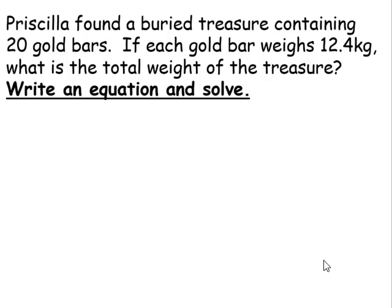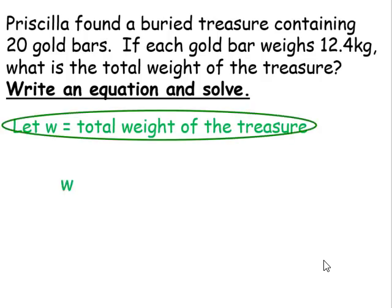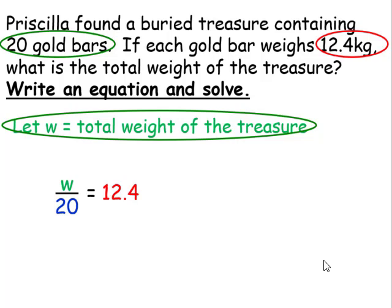So again, we're going to define the variable stating let w equal the total weight of the treasure. Therefore, if we have the weight of the treasure and we divide by the number of gold bars, this will give me the weight of each bar. We could also say the total weight of the treasure divided by the weight of each gold bar will give me the total number of bars.